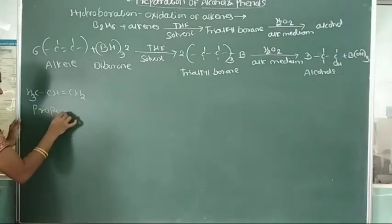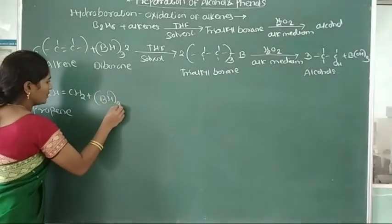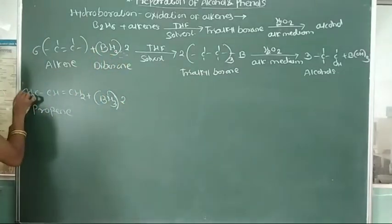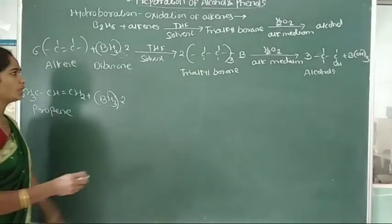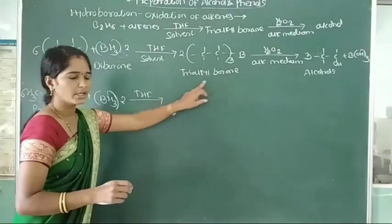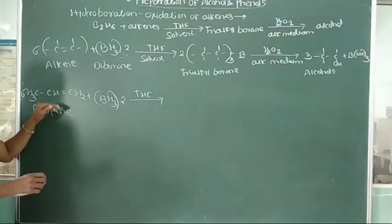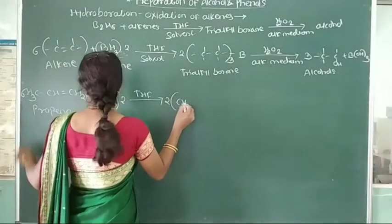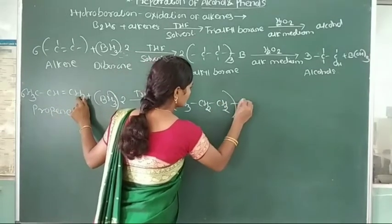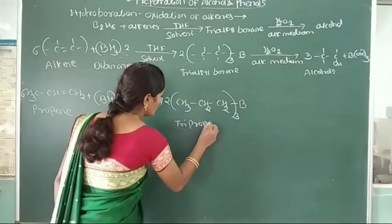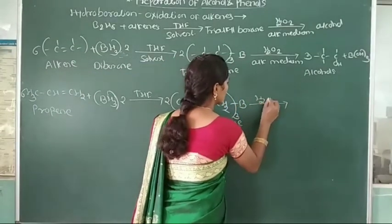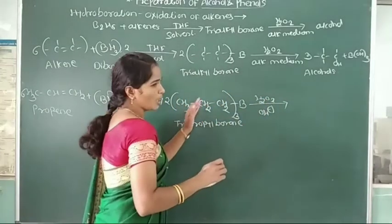This propene is treated with diborane, B2H6 twice. Six molecules of propene react with diborane in presence of THF solvent. Here formation of trialkyl borane, that is tri-propyl borane: (CH3CH2CH2)3B.